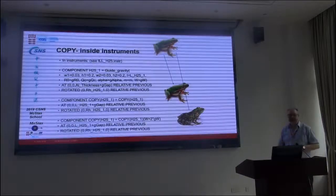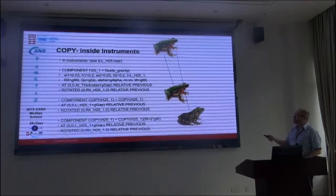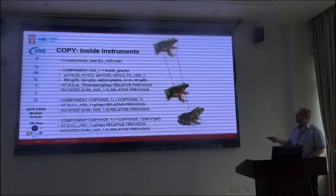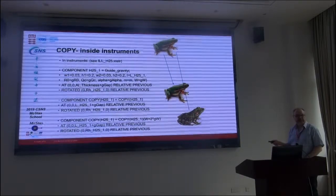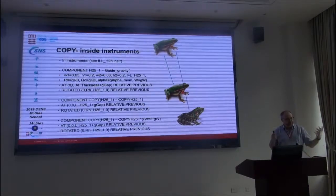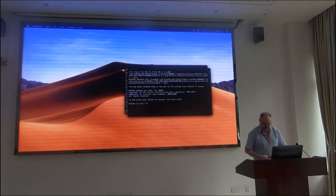We also have copy, which we discussed earlier. If you have a component - say a Guide_gravity - in your instrument file and you want another identical one, you just do a copy. You can even do a copy on the naming, and it will automatically generate a different name. You can also have a copy with different parameters - so you specify the different parameter details. Multiple copies of a component in your instrument file are possible via the copy keyword. And now it's time for you to work.